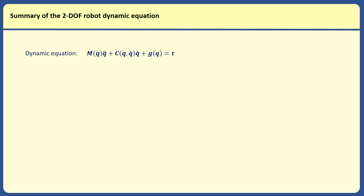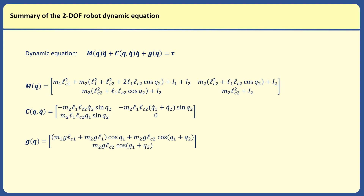In summary, the dynamical model of a robot manipulator is m of q times q-double-dot plus c of q and q-dot times q-dot plus g of q equals tau. The matrices m and c and the vector g for a 2-degree-of-freedom robot are shown in these forms. We will explain some properties of the dynamical model in the next video and then explain how the vector tau can be controlled so that the vector of joint variables converges to a desired vector or follows a vector of desired trajectories.